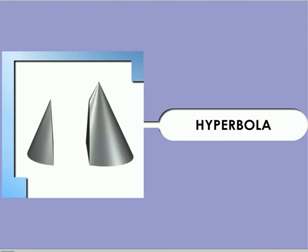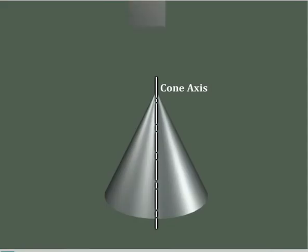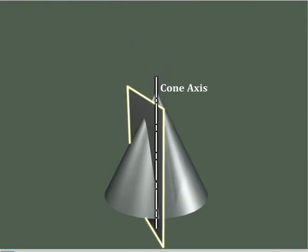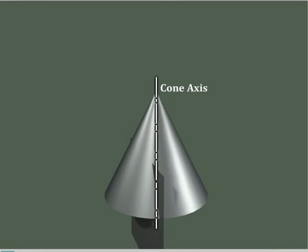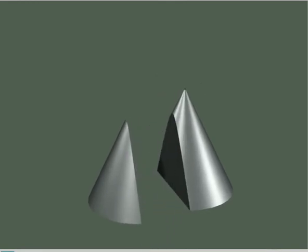Hyperbola. When the section plane cuts both the parts of the double cone on one side of the axis, we can get a hyperbola as the conic section.